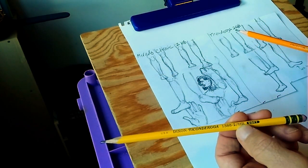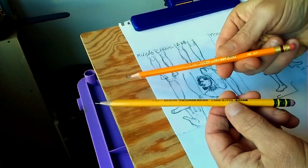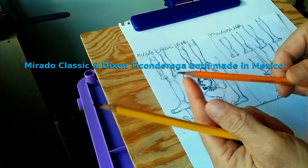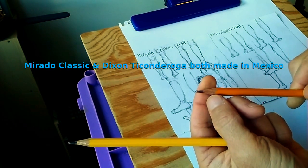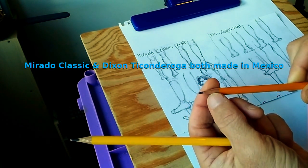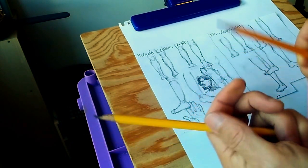I do think the Murado is a little darker than the Ticonderoga. The Murado is made in Mexico. It is a very hard wood. This sucker is hard to sharpen. I guess it's cedar wood, but it feels a lot harder than cedar.